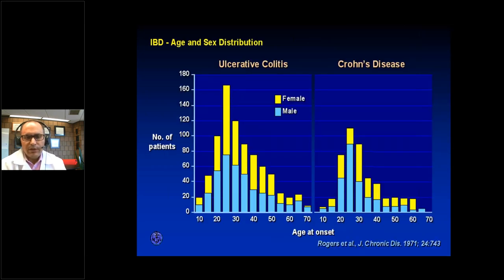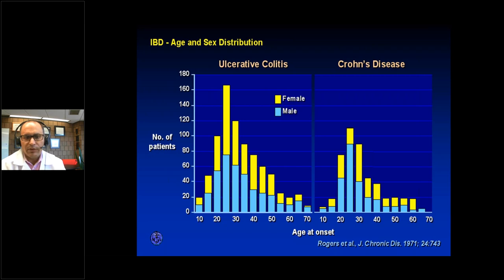Looking at age distribution, this disease typically affects patients in their 20s to 40s. But it can affect any age group. About 15% of patients are under the age of 18, and we're even seeing Crohn's and colitis in very young children, called very early onset IBD. About 15% of new diagnoses are in patients who are 60 years or older.